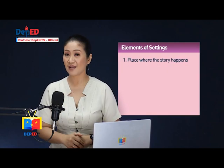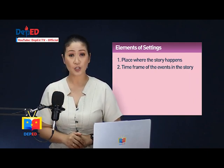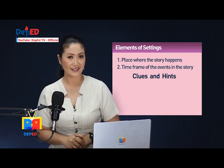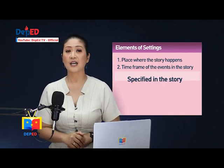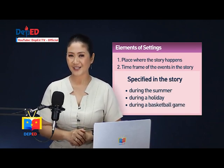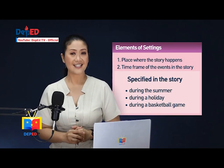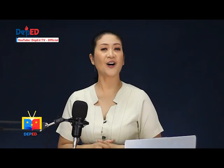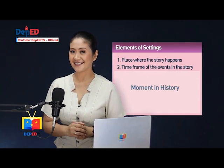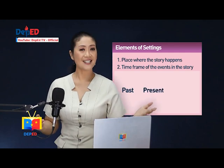The second element is the time frame of the events in the story, which may not always be stated. Sometimes you can guess the time through clues and hints in the story. It can be more specific, such as during the summer, during a holiday like Christmas, or even during a basketball game. When you go to bed, it is usually night time. When you eat breakfast, it is in the morning. The time in a setting can also mean a time period or a moment in history. It can be classified as general, such as in the past, in the present, or in the future.